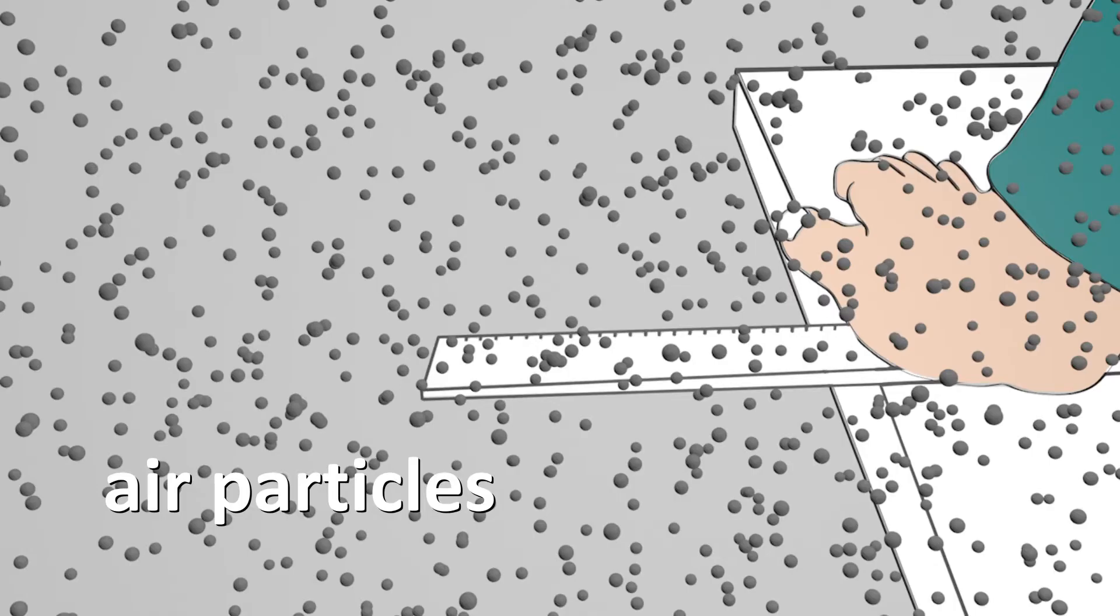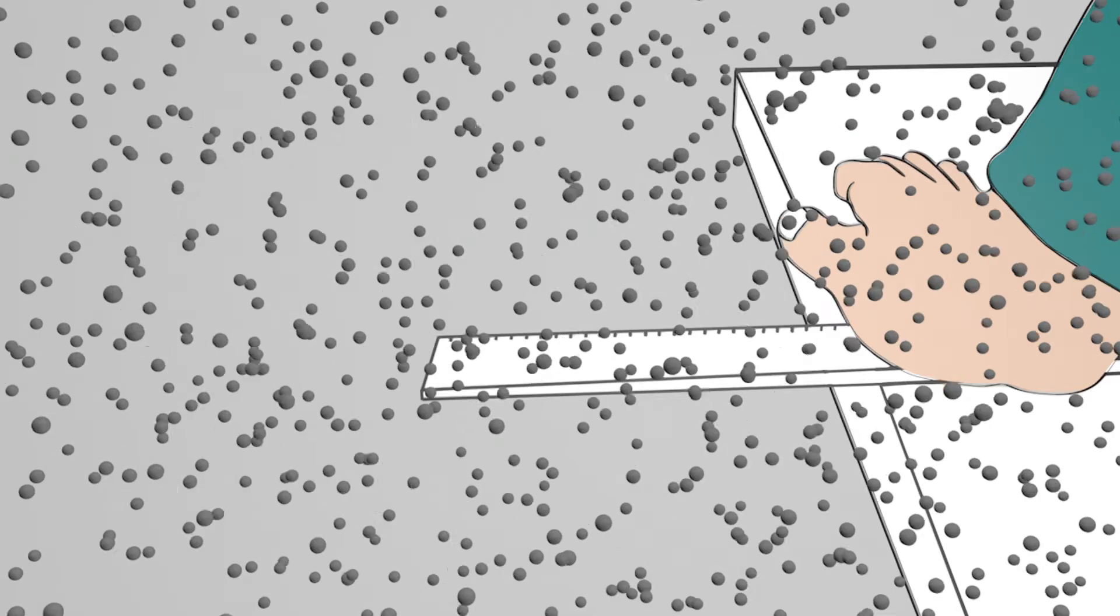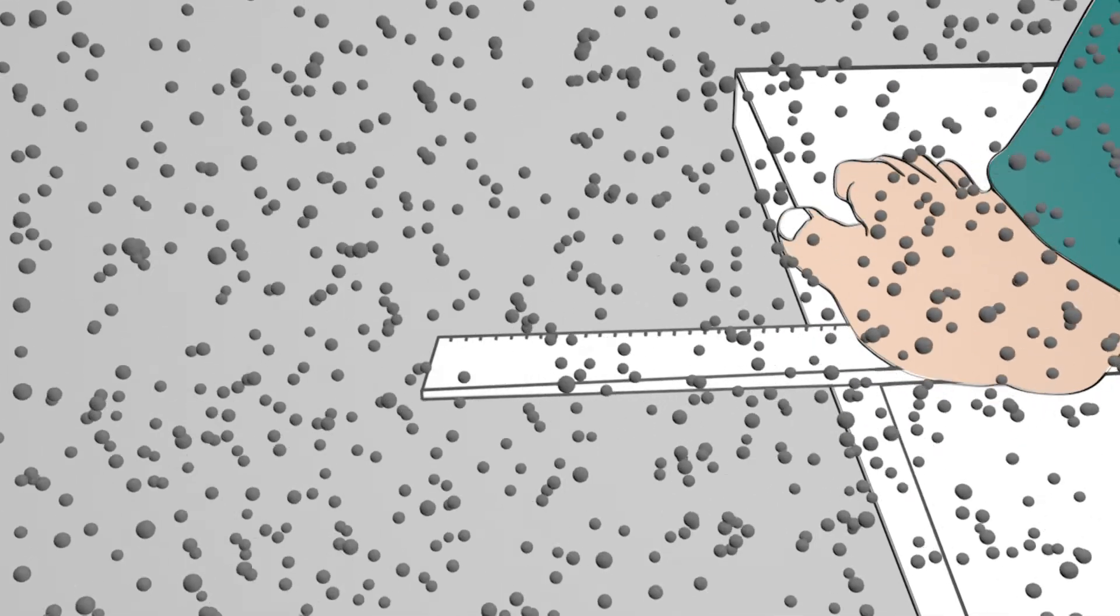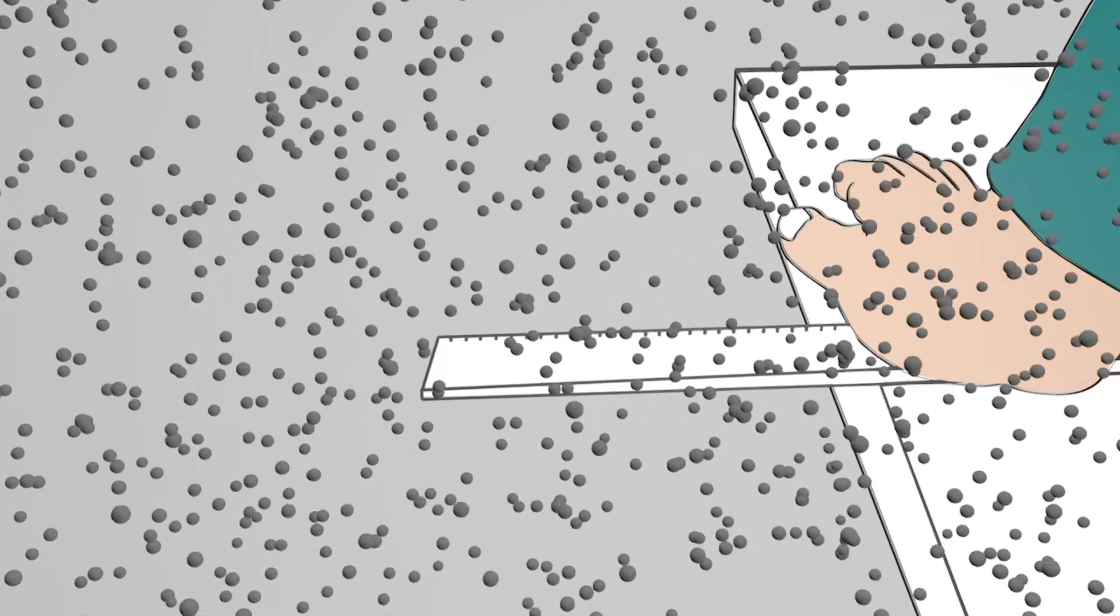The ruler is surrounded by lots of small invisible air particles. Nobody knows what these particles really look like. In order to be able to imagine these they are shown in the animation using small gray spheres. The air particles are never at rest and constantly collide with one another.